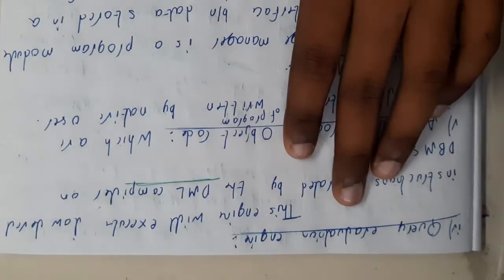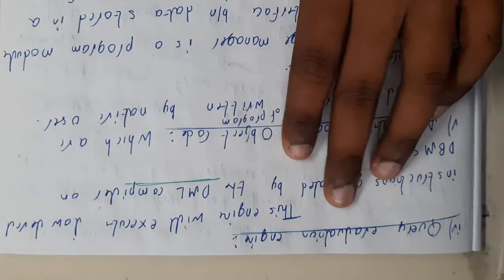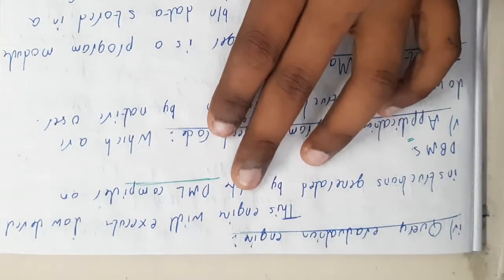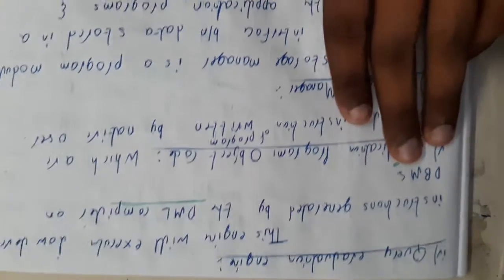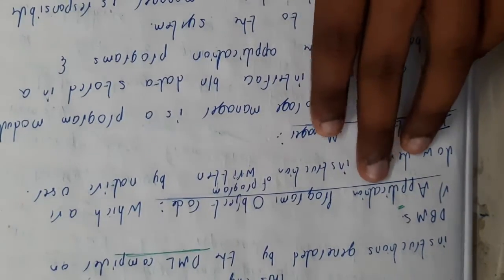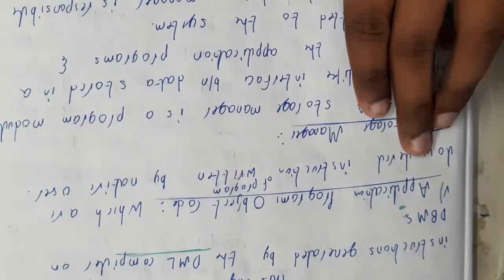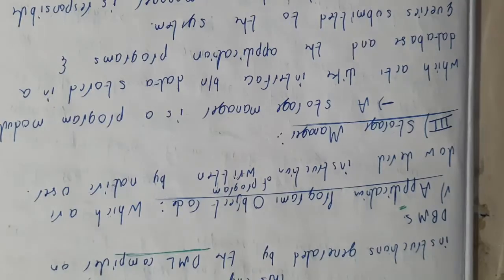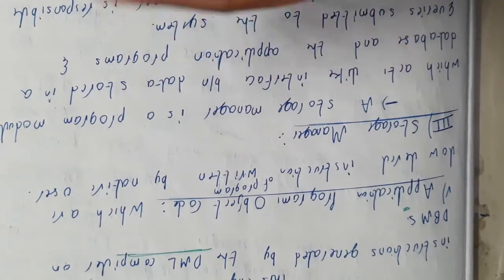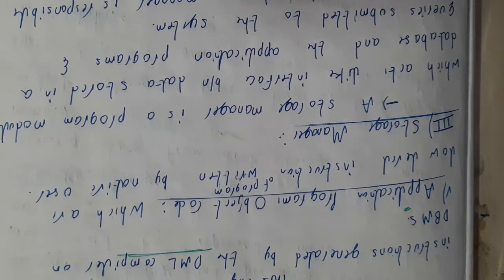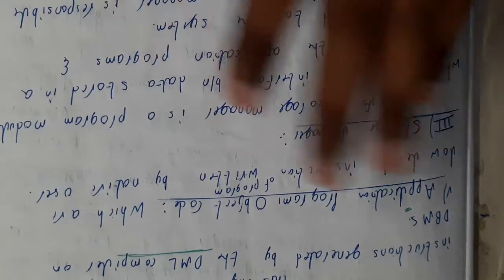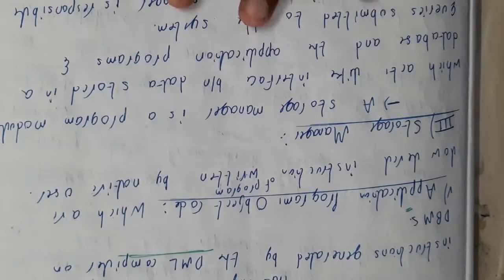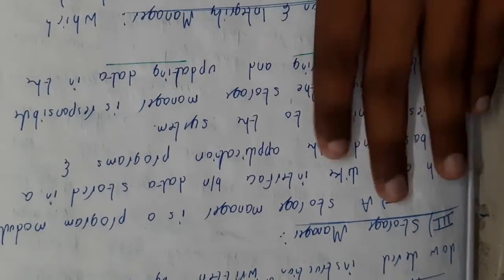After that we are having the query evaluation engine. This engine will execute the lower-level instructions generated by the DML compiler on the DBMS. Application program object code refers to the things written by the naive users — I told you that naive users will be using or writing some block of code, and those are written by these guys.